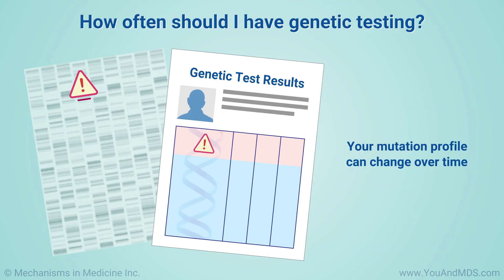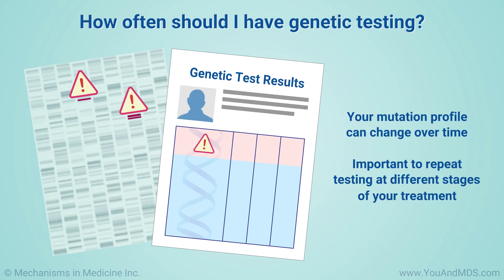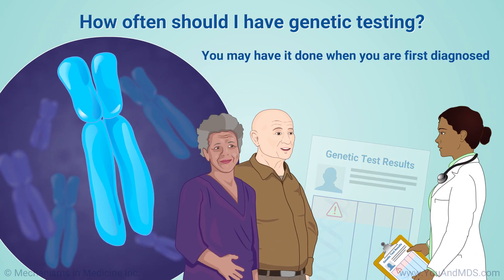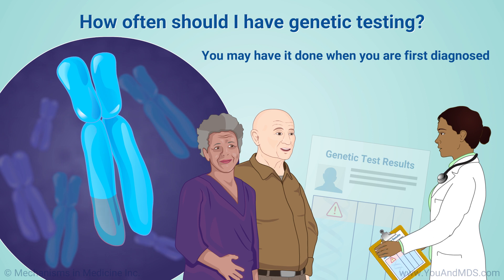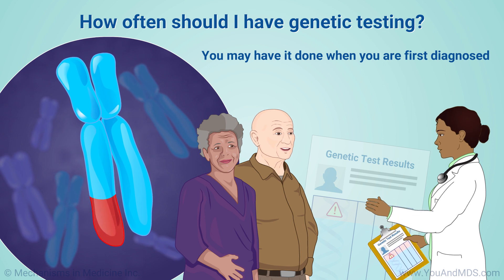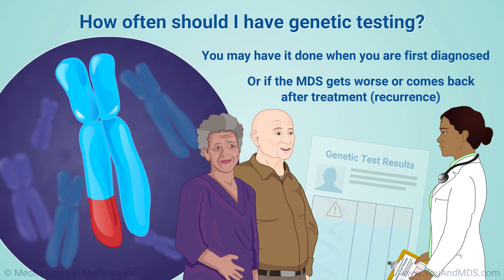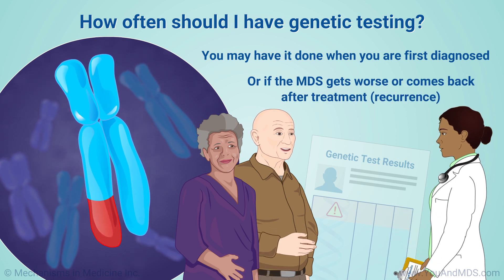Your mutation profile can change over time, so it is important to repeat the testing at different stages of your treatment. For example, you may have it done when you are first diagnosed. You can also have it done if the MDS gets worse or comes back after treatment, called a recurrence.